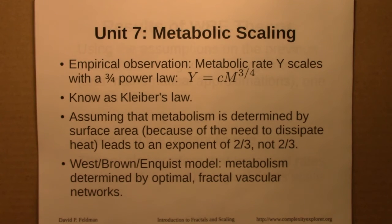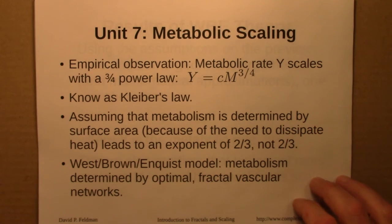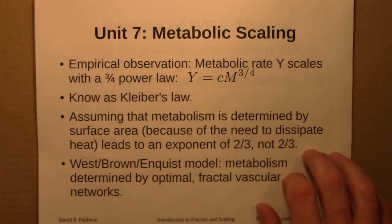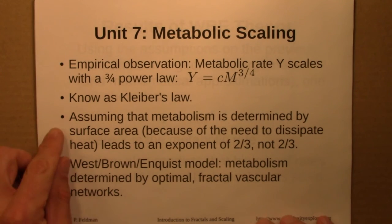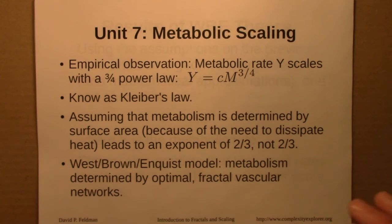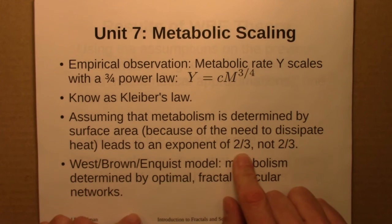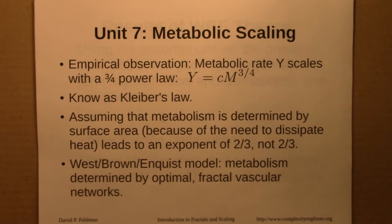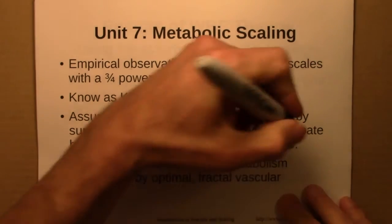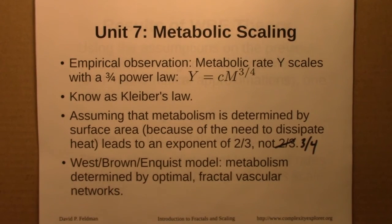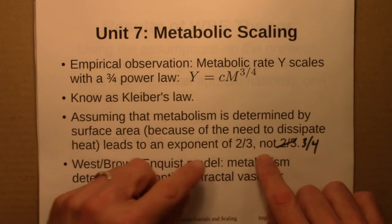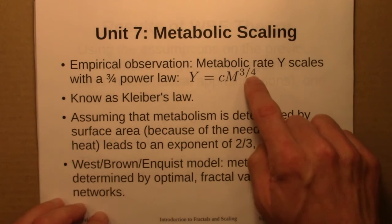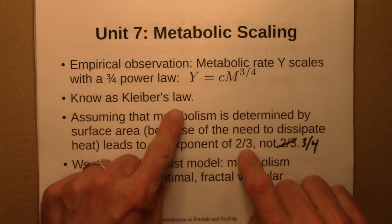Then in Units 7 and 8, we looked at particular applications of scaling ideas. First, in Unit 7, we looked at metabolic scaling. The starting point was the empirical relationship that metabolic rate scales with a three-quarter power law, known as Kleiber's law. This is a puzzle, because if we assume metabolism is determined by surface area — because creatures need to dissipate heat — we would expect an exponent of two-thirds, not three-quarters. In the late 1990s, West, Brown, and Enquist put forth a model explaining why we see three-quarters rather than the two-thirds predicted from surface area.